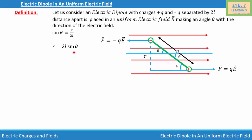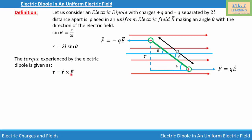Now let's find the torque acting on the electric dipole due to its rotation in the field. The torque experienced by the electric dipole is given as τ = r × F, where r is the perpendicular distance and F is the force acting on the dipole. Substituting, τ = 2l sin θ × qE.